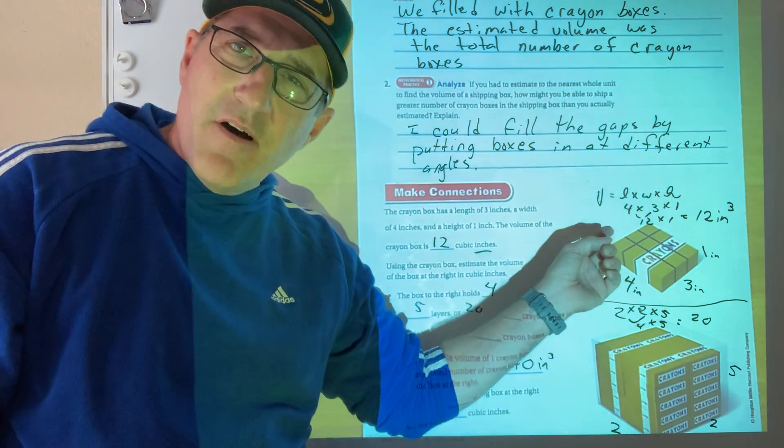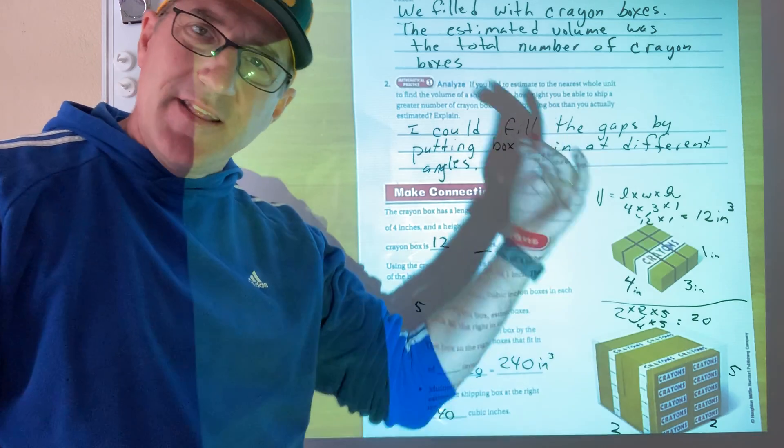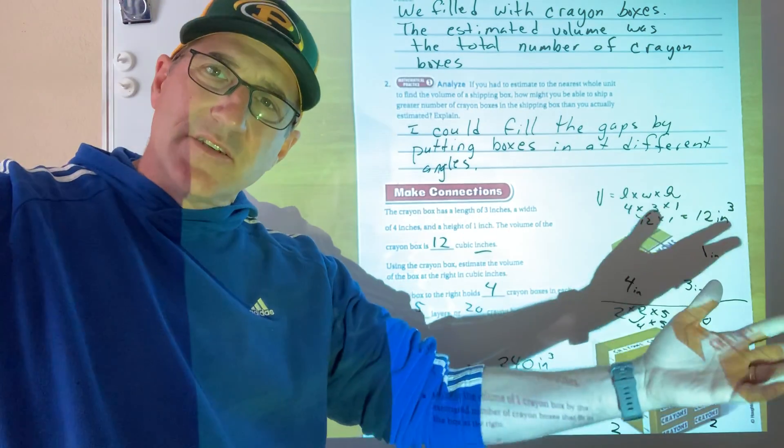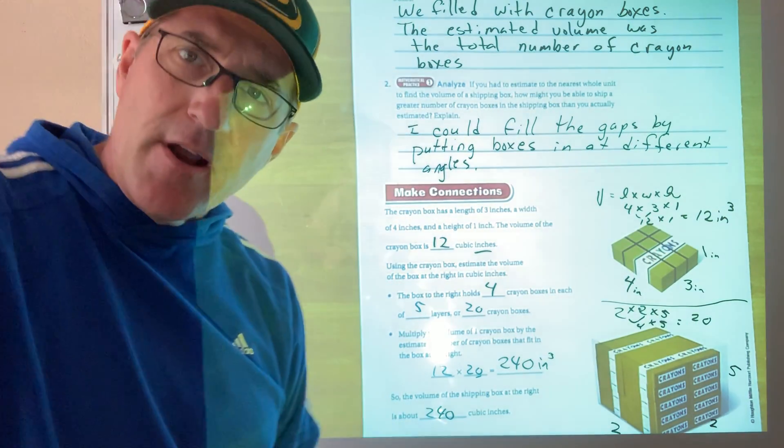So what's the volume of the little box? How many of those boxes can I fit in the big box? Multiply those things together and skadoosh, you've got an estimate. Easy. All right.